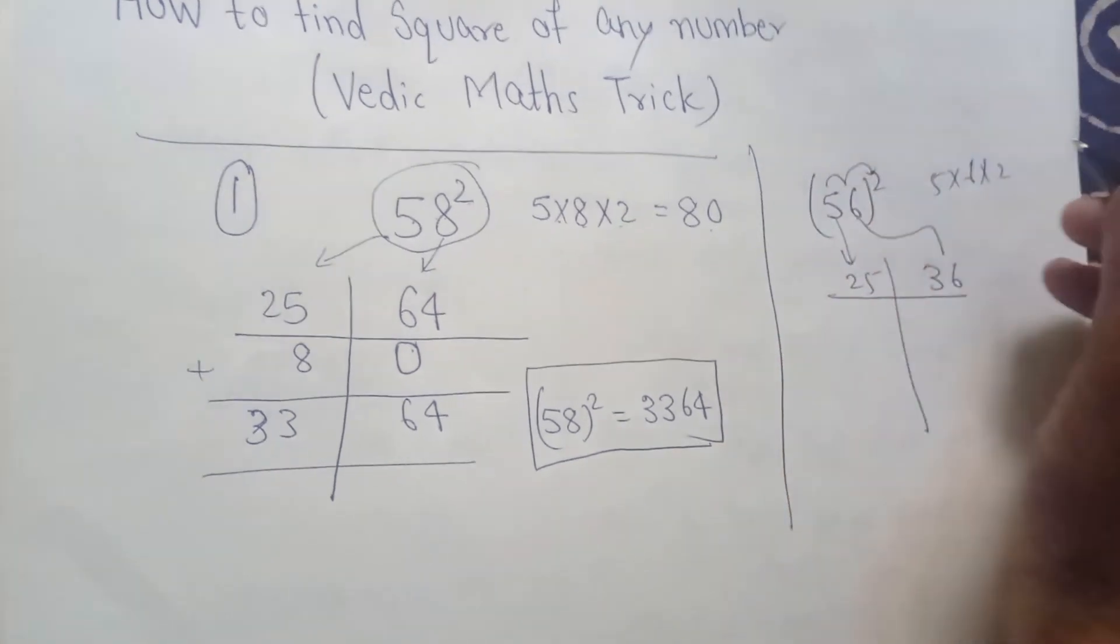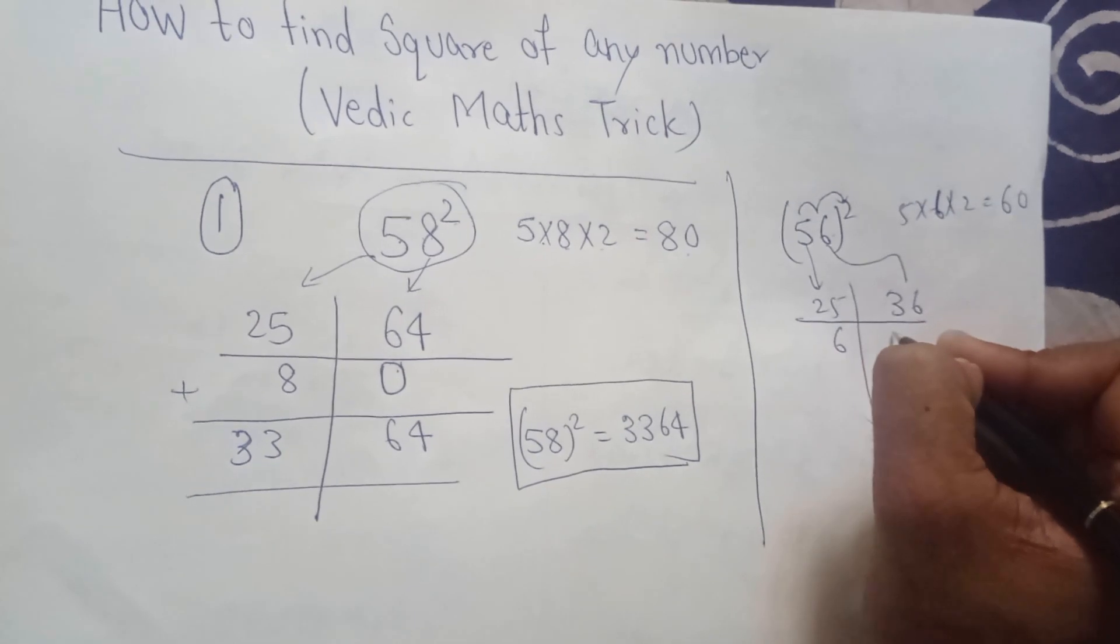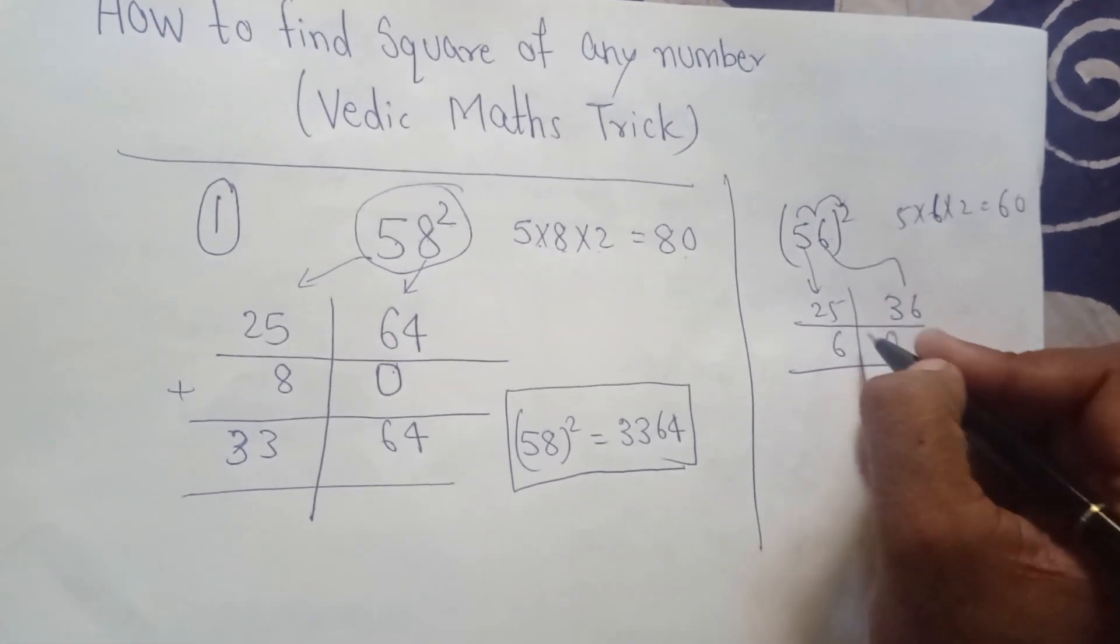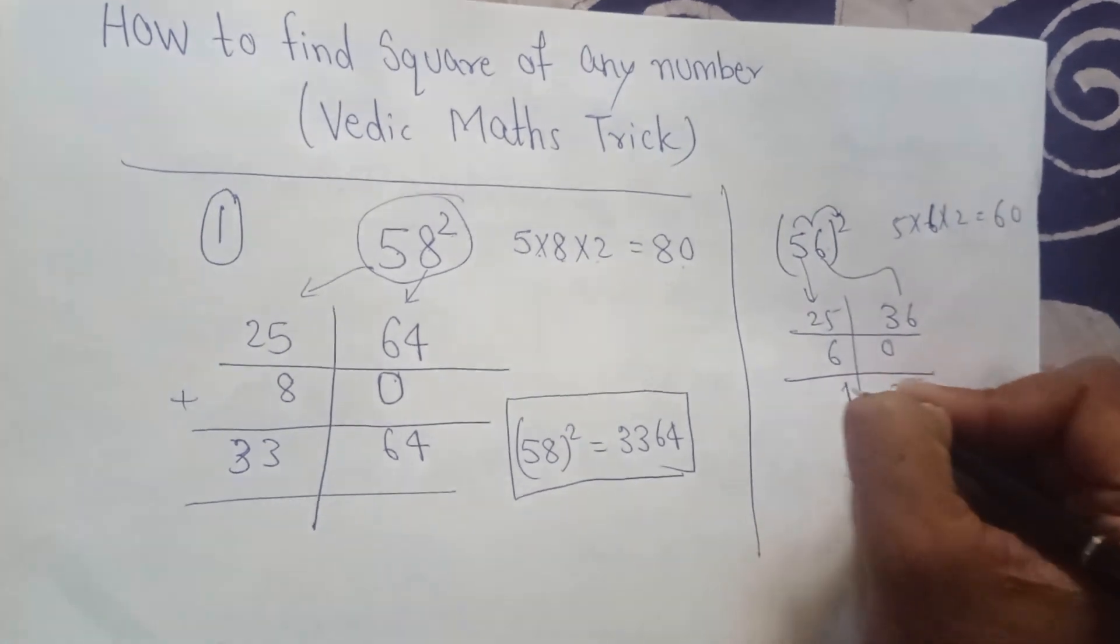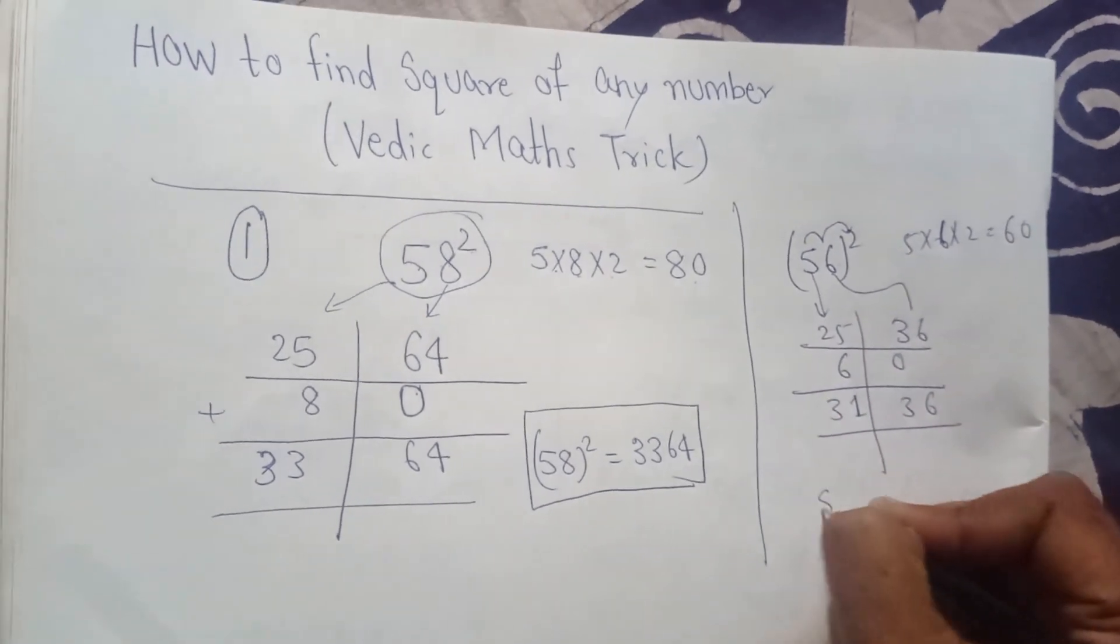Now 5 into 6 into 2: 5 multiply by 6 is 30, multiply by 2 is 60. I have to put 6 here, 0 here. Now what will happen: 6, 3, 6 plus 5 is 11, 2 plus 1 is 3. So the square of 56 is 3136.